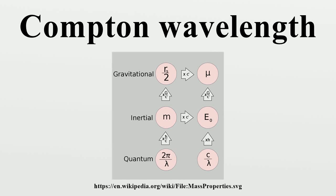The Compton wavelength is a quantum mechanical property of a particle. It was introduced by Arthur Compton in his explanation of the scattering of photons by electrons.